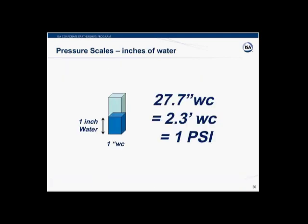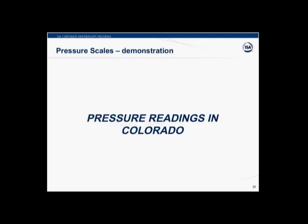The last scale Hunter covers is inches of water column, a unit very common in the US but not used in most metric countries (where WC means water closet in Europe). An inch of water is the weight of a one-by-one-by-one-inch cube of water. For reference, 27.7 inches of water equals 2.3 feet of water, which equals 1 PSI. Hunter then turns it over to Roy for a live demonstration.